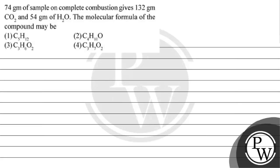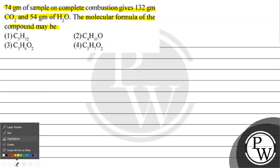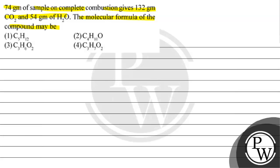Let's read this question. A 74 gram sample on complete combustion gives 132 gram of carbon dioxide and 54 gram of water. The molecular formula of the compound may be. The options given are: Option 1 is C5H12, Option 2 is C4H10O, Option 3 is C3H6O2, Option 4 is C3H7O2.